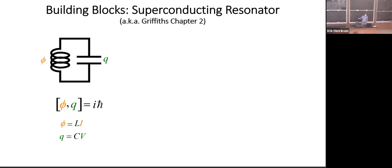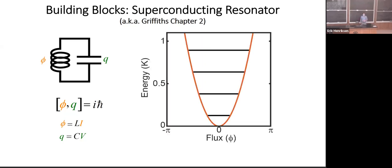You can show that the energy is quadratic in phi and quadratic in q. It goes like phi squared and q squared. The Hamiltonian goes like that. And that phi and q are canonically conjugate variables. They have this commutation relation between them. So they basically have an uncertainty principle. You can't measure them both perfectly certainly at the same time. Those two properties, this conjugate commutation relation and the quadratic energy, mean that you have a parabolic potential with evenly spaced energy levels. This is a quantum harmonic oscillator.